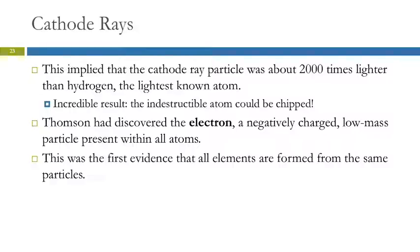What he had discovered was the electron. The electron is a negatively charged particle, very low mass, that is found within all atoms. And that's why the cathode rays were the same regardless of the material of the anode, because all atoms have electrons in them, and all electrons are the same. So this was the first evidence that all atoms of different elements are actually composed of the same fundamental particles. So this was kind of crazy.